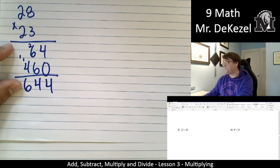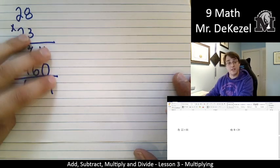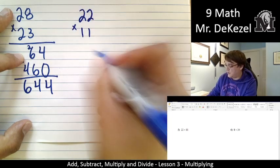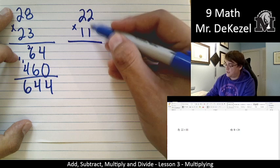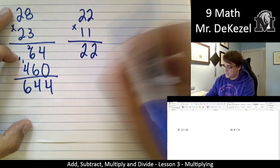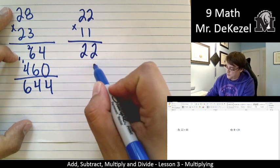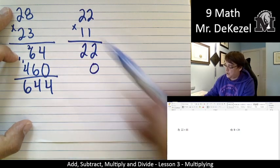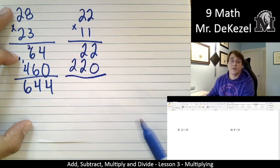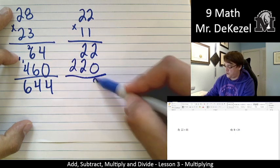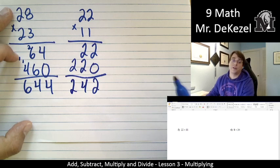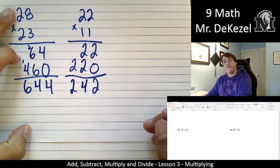Let's go to a couple more. For good measure, we have 22 times 11. One times 2 is 2 and 1 times 2 is 2. Since I have two digits on the bottom, I'm going to bring a zero as a placeholder. One times 2 is 2 and 1 times 2 is 2. We're gonna add all those up. Two plus zero is 2. Two plus 2 is 4 and 2 goes down. So 242 is our answer for number five.